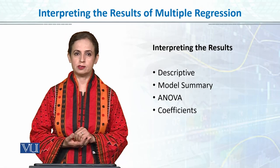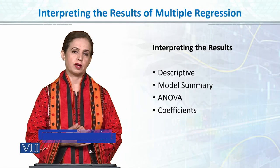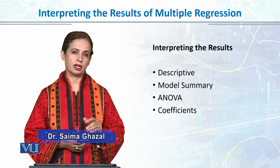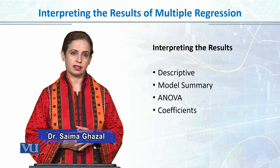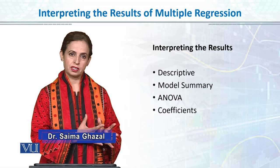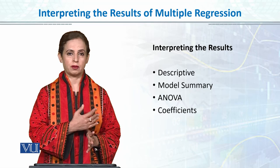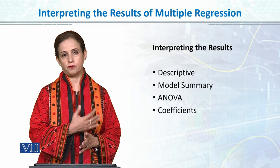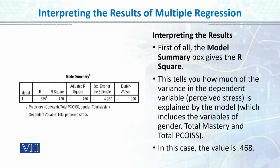Now we are interpreting the results of multiple linear regression. In the output we have the main tables: one gives the descriptive statistics with means and standard deviations, one gives the model summary, one gives the ANOVA table, and then the coefficients table. Let's discuss each one by one.